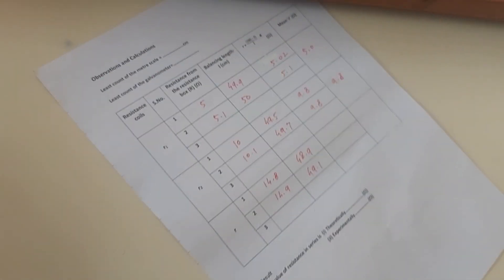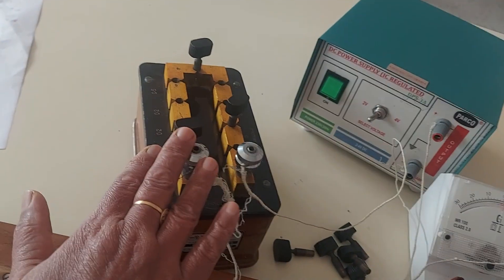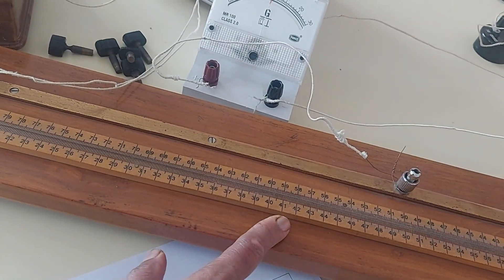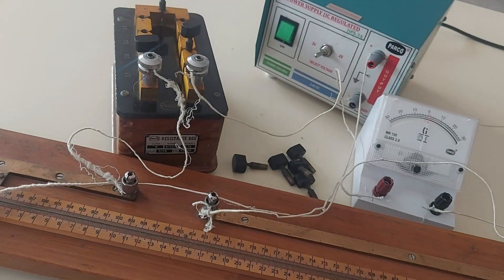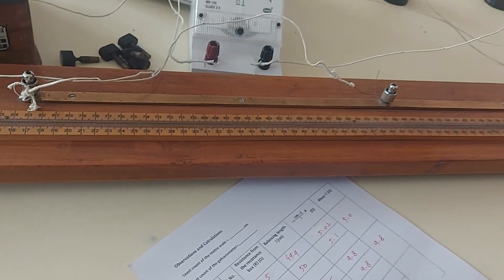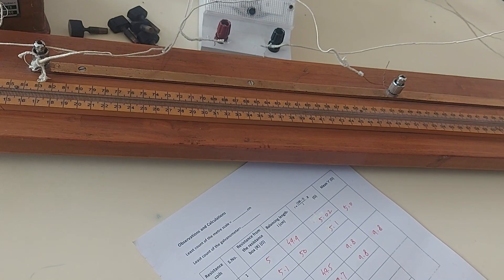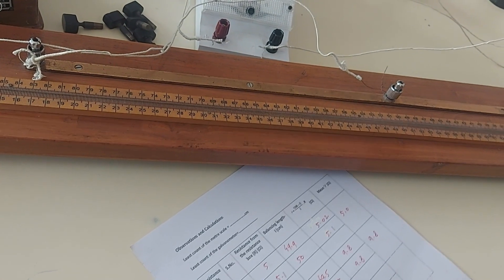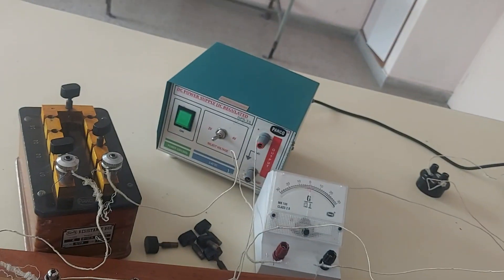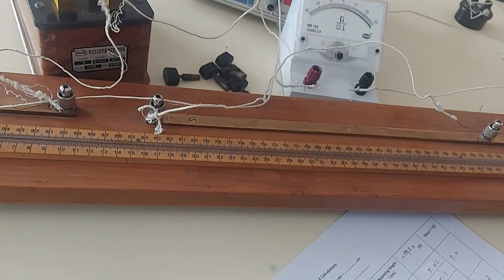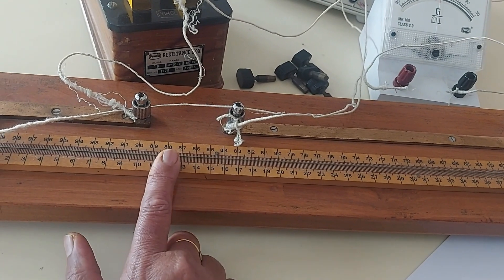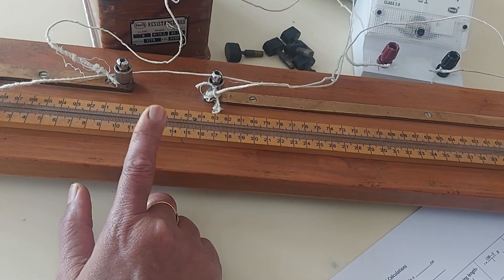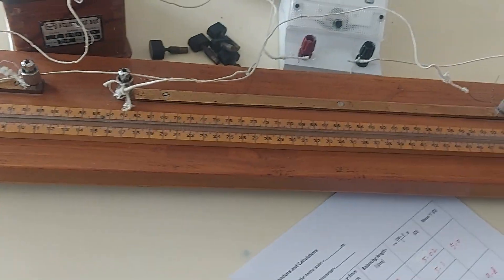Now see, as we are increasing the value in the resistance box, the balance point is also shifting towards right. That means the balancing length on this side of the resistance box also increases. And the reason why we need to switch it off in between all observations is so that this high resistivity constantan wire doesn't get heated up. If it gets heated up, its resistivity will change and so does the resistance.